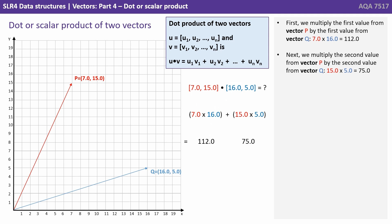Next we multiply the second value from vector P by the second value of vector Q, so that's 15 times 5, or 75. Finally we add the two results together, giving us 187.